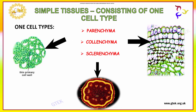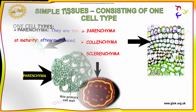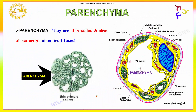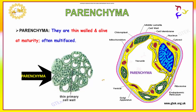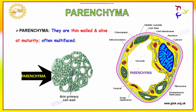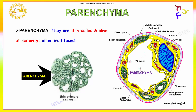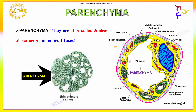Let us talk about parenchyma. Parenchyma has a thin wall and is alive at maturity. It is often multi-sided. It has a primary cell wall which is thin, and the space inside is called the vacuole. It has mitochondria and chloroplasts.